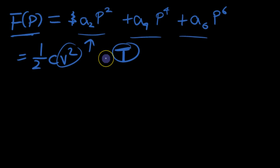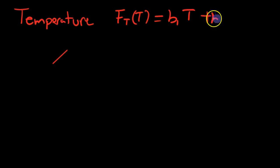We'll now derive the free energy with regards to temperature as well. The temperature portion of the free energy we can write as FT(T) = b₁T + b₂T² and so on, similar to the other case.